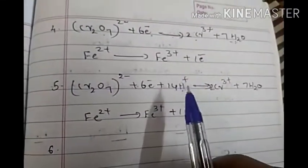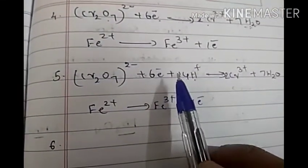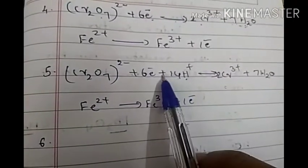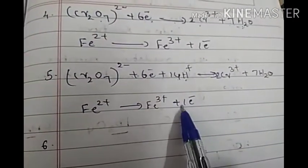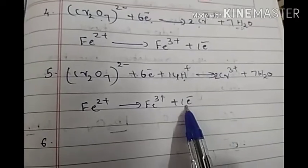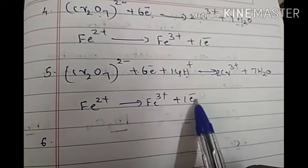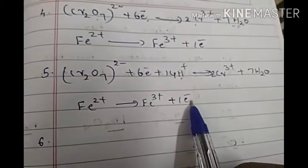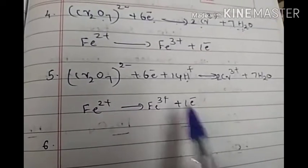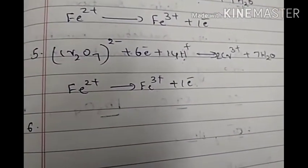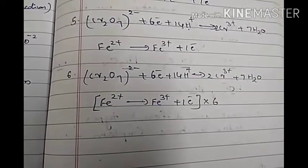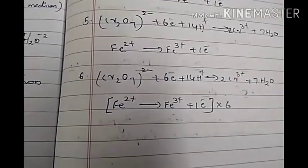In Step 6, we equalize the number of electrons. In the reduction half-reaction there are 6 electrons, but in the oxidation half-reaction there is only 1 electron. To equalize the number of electrons in both equations, we multiply the entire oxidation half-reaction by 6, giving: 6Fe²⁺ → 6Fe³⁺ + 6e⁻.